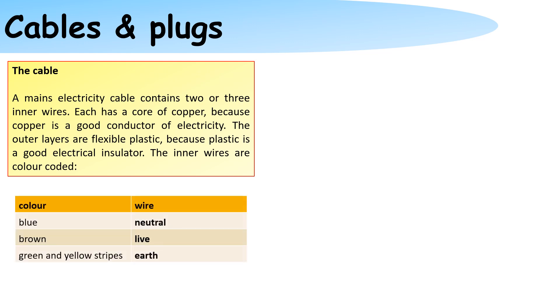A blue wire is neutral. A brown wire is for the live and the wire that has green and yellow stripes is the earth wire.